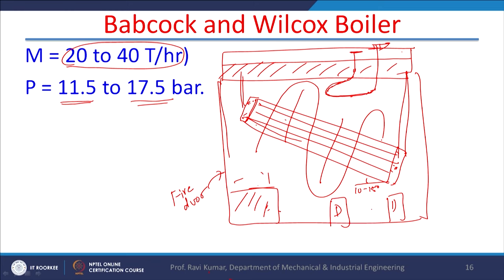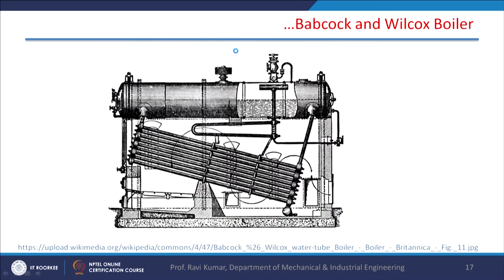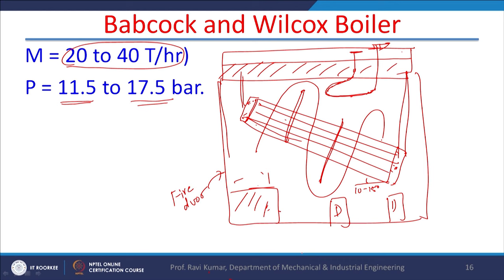It is a very big boiler and has a number of doors for inspection purposes, along with pressure gauges and mountings provided on the shell for monitoring and operation. The inclined tubes can be seen in the schematic; there is a superheater taking steam from the drum. The main attraction of this boiler is it can maintain pressure between 11.5 to 17.5 bar, it can supply superheated steam, and the steam generation rate is quite high at 20 to 40 tons per hour. So I have explained these four classical boilers — that is all for today. In the next class we will take up high pressure boilers. Thank you.